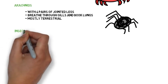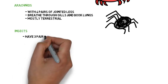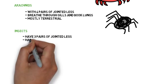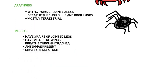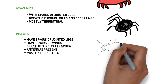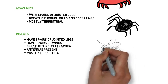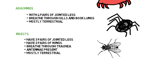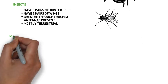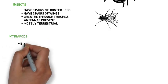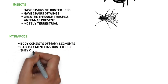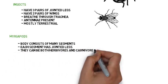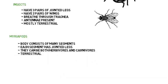Insects have three pairs of jointed legs, have two pairs of wings, breathe through trachea, have antennae present, and are mostly terrestrial. Examples of insects are locust, moth, housefly, and grasshopper. Myriapods have bodies consisting of many segments; each segment has jointed legs. They can be both herbivores and carnivores, and are terrestrial. Examples of Myriapoda are centipede and millipede.